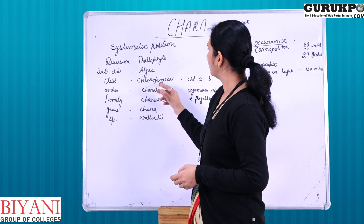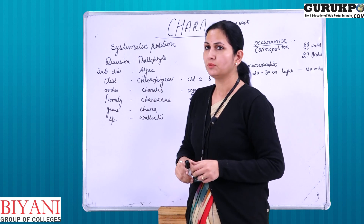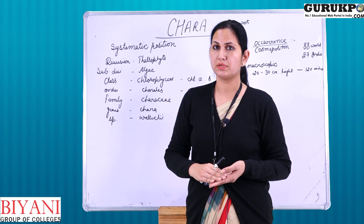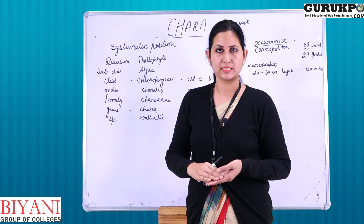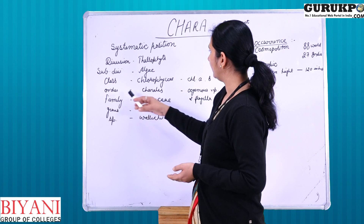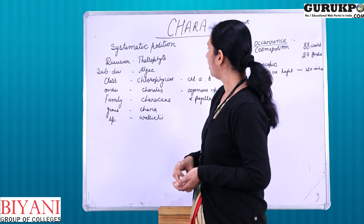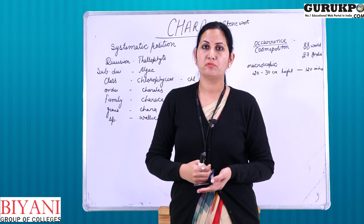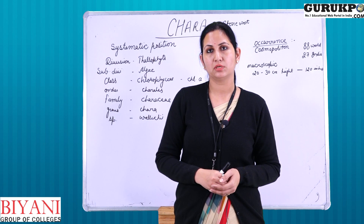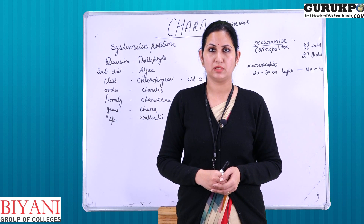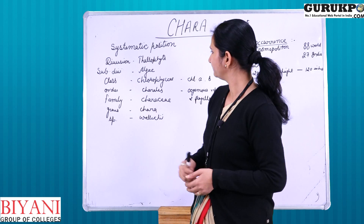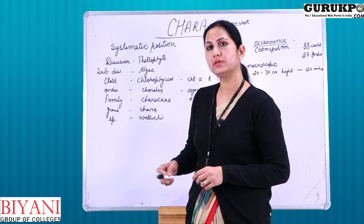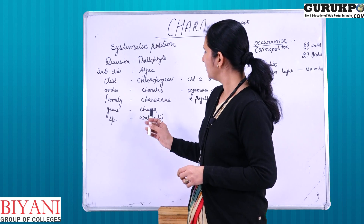Chara belongs to class Chlorophyceae, meaning there are Chlorophyll A and Chlorophyll B — two pigments which are mandatory in this class. It belongs to order Charales, in which a very advanced type of sexual reproduction, called oogamous type, is found. It belongs to family Characeae, genus Chara, and today we are discussing the species vulgaris.